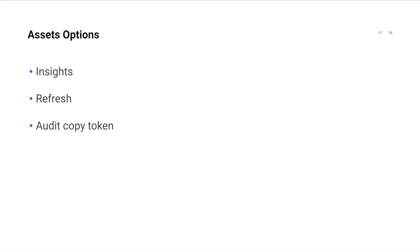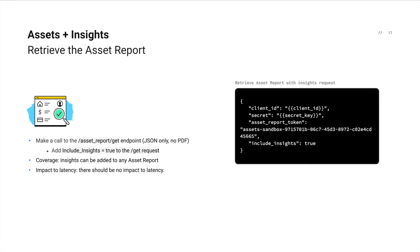In this last section I'll cover a few of the additional features that assets supports. The first feature is what we call assets insights. By default, asset reports return historical transaction data exactly as it appears on the borrower's bank statement. Alternatively, you can have Plaid normalize and categorize this data by setting the include insights boolean to true in your asset report request. This can be particularly helpful if you plan to surface the transactions back to the user or want to better understand a user's spending patterns by category.